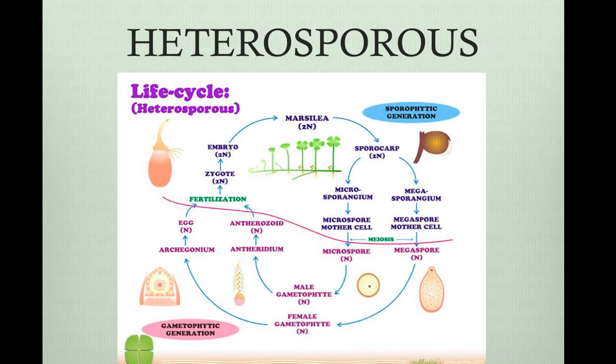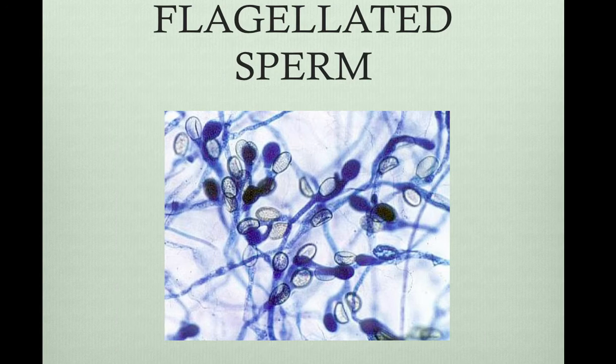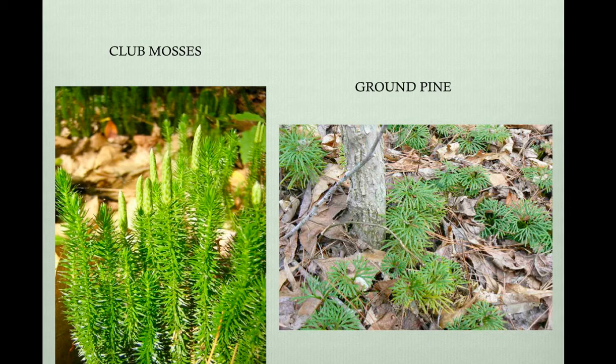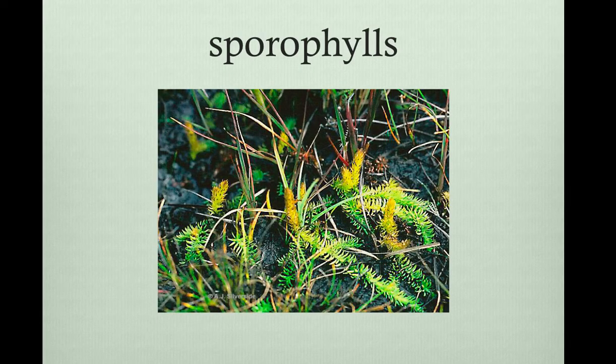All seedless vascular plants have flagellated sperm that needs water to swim to the egg. Therefore, they are most common in damp habitats. There are about a thousand species of lycophytes, and they include the club mosses and the ground pine, even though they're not mosses or pines. Most are tropical and are epiphytes, which means they grow on other trees, but they're not parasitic. Other species grow close to the ground in temperate forests. Sporophylls are the groups of specialized leaves that produce sporangia, which cluster to form cones. The mature club-shaped cones are oil-rich and flammable, and they used to be used as early flash bulbs. The spores develop into haploid gametophytes, and they're very tiny.